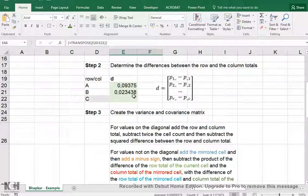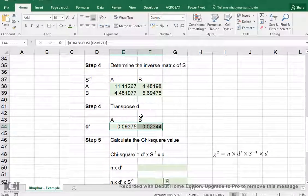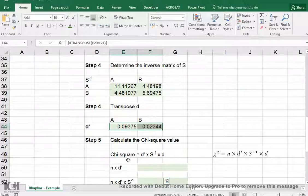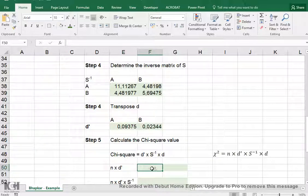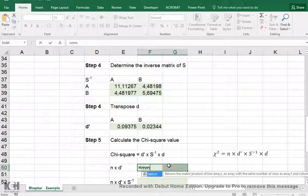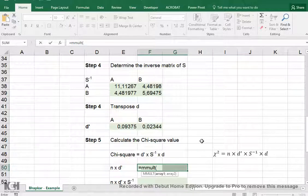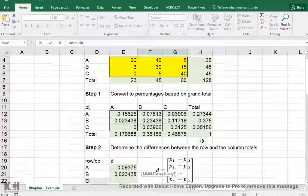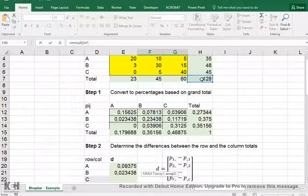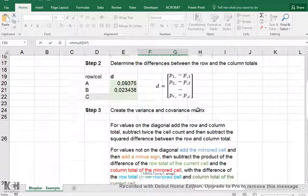All right, and then finally we can start calculating the chi-square value. We need to first, this is its formula in the end, and we actually first need to multiply n with that just now transpose d. So we select two of them again, equals MMULT, which stands for matrix multiplication, and the first one is simply the total count, that's this one, semicolon or comma depending on your system settings,